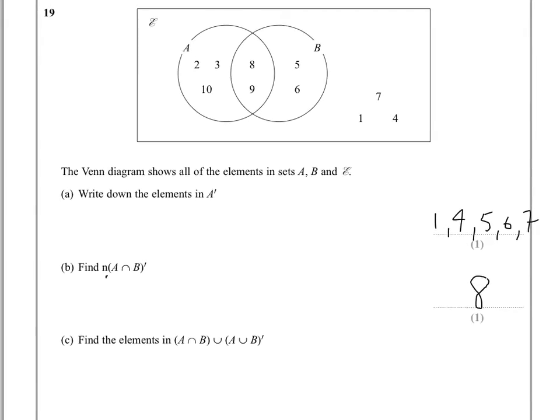In part C then we're asked to find the elements in A intersection B and the union of that with what is not in A union B. Now that's a lot to get your head around so let's just take it one step at a time. Let's look at the first bit, A intersection B. So what is in A intersection B? Well we know that from the previous question, it's 8 and 9.